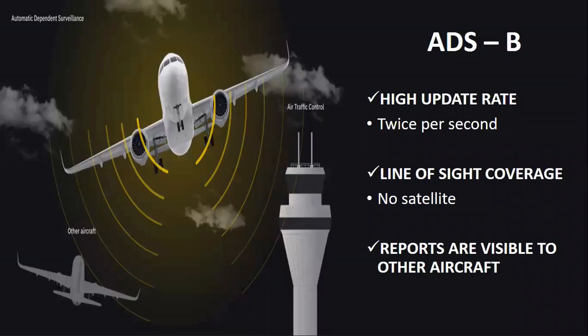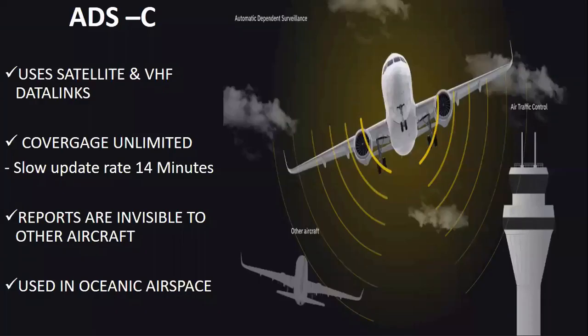ADS-B broadcasts its position automatically at a very high update rate of twice per second. This information is used for real-time surveillance service by air traffic controllers. This coverage is limited to the line of sight. ADS-Contract: reports such as top of climb and position reporting points at specified time intervals are sent by aircraft in accordance with a contract set up with the ground ATC system. These reports basically replace verbal reports from the pilot and facilitate the application of procedural separation in oceanic airspace.